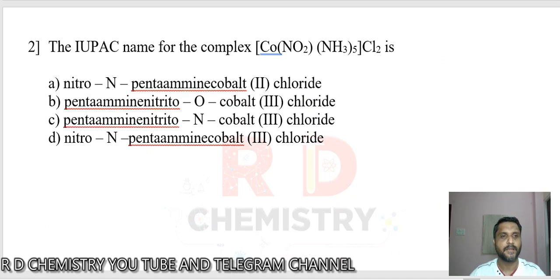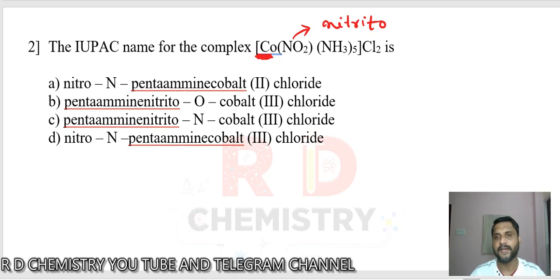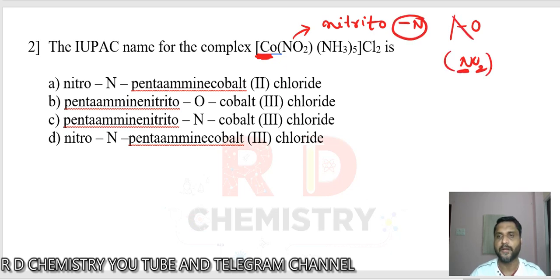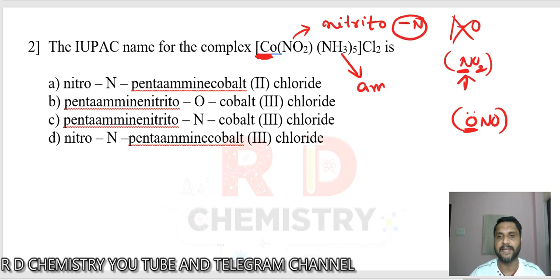Question number 2. The IUPAC name of the complex. This involves cobalt and NO2, which is known as the nitrito ligand. It is ambidentate — it can be nitrito-N or nitrito-O. When nitrogen is written first, it is nitrito-N because nitrogen is the donor atom. It can also be ONO, in which case oxygen is the donor atom. So it is nitrito-N here. NH3 is the amine ligand.